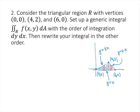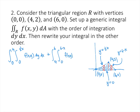To set this up in the order dy dx, I'm going to need two separate integrals. I'll integrate from 0 to 4, with the inner integral from 0 to one-half x of f(x, y) dy dx, plus, for the second part of that region, an integral from 4 to 6 with the inner integral from 0 to 6 minus x of f(x, y) dy dx.